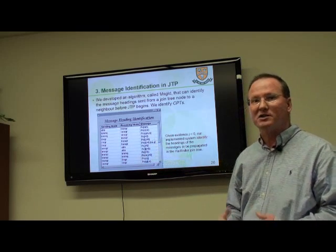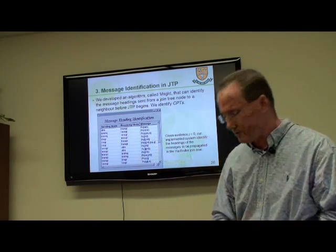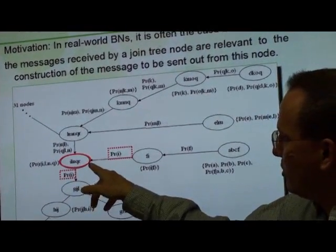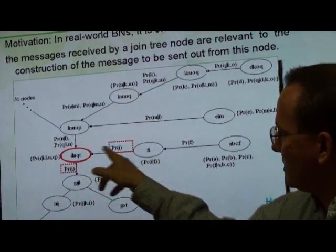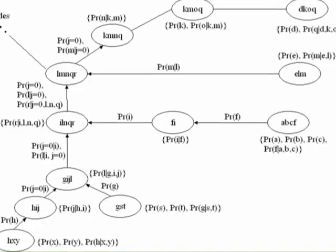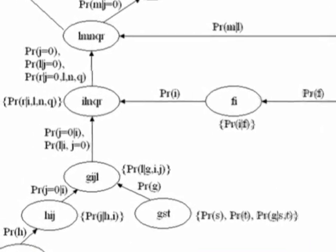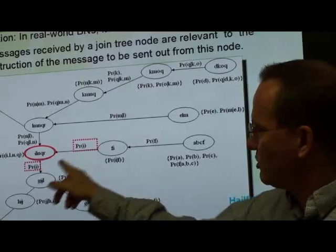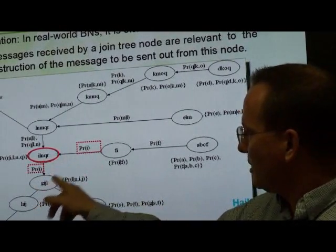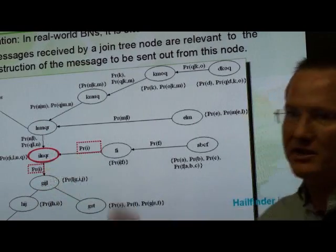And that separates us from all other Bayesian network inference algorithms. Another algorithm would say this node cannot send its messages until it's received three messages. But since we know the structure of the messages, we can see that this is the same distribution, so this node is just going to be forwarding this one distribution and it doesn't need these other two.